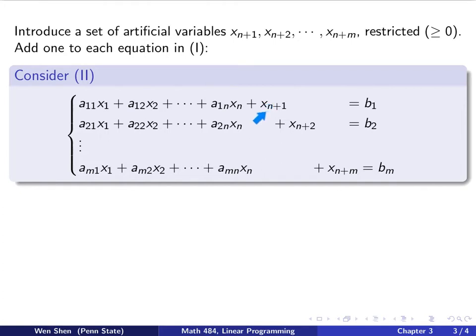So we add xn+1 to the first equation, xn+2 to the second equation, and xn+m to the m-th equation. So we get a new system, and we call this system 2. So why did we do that? What advantages do we have now? Let's take a look.